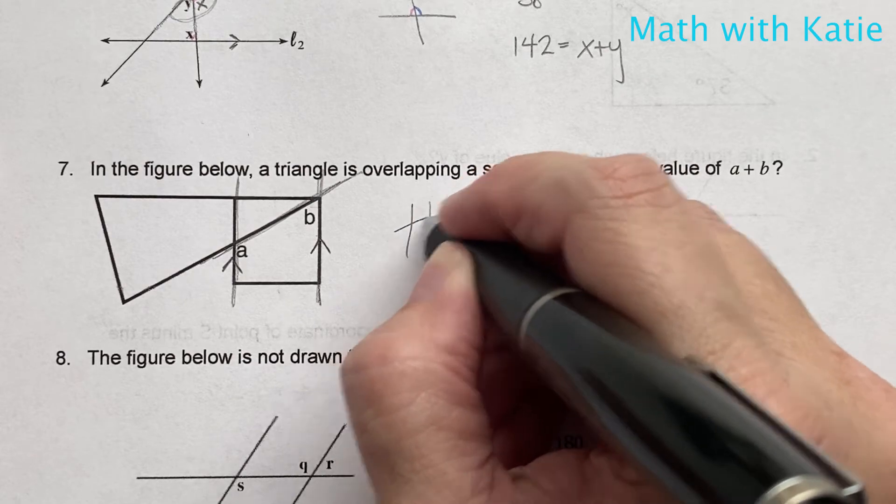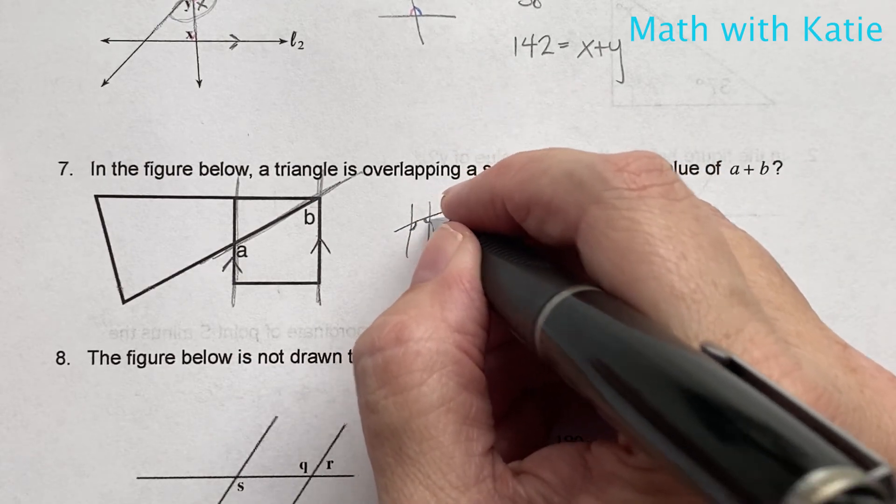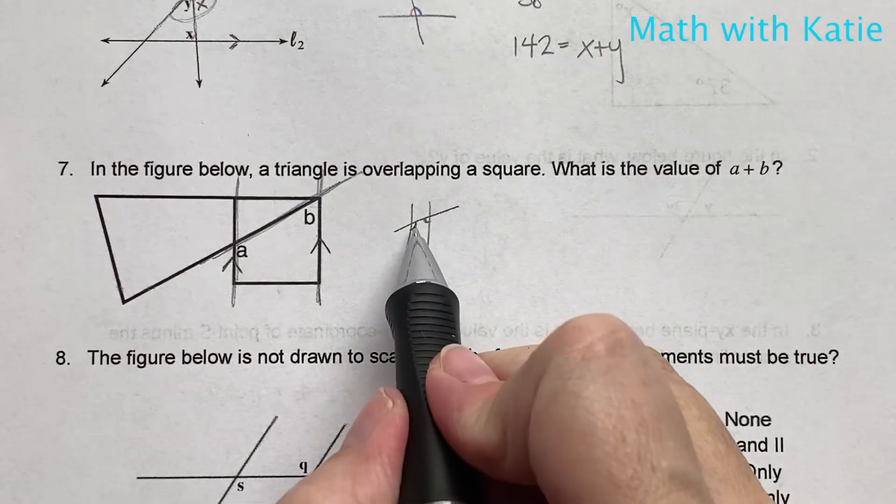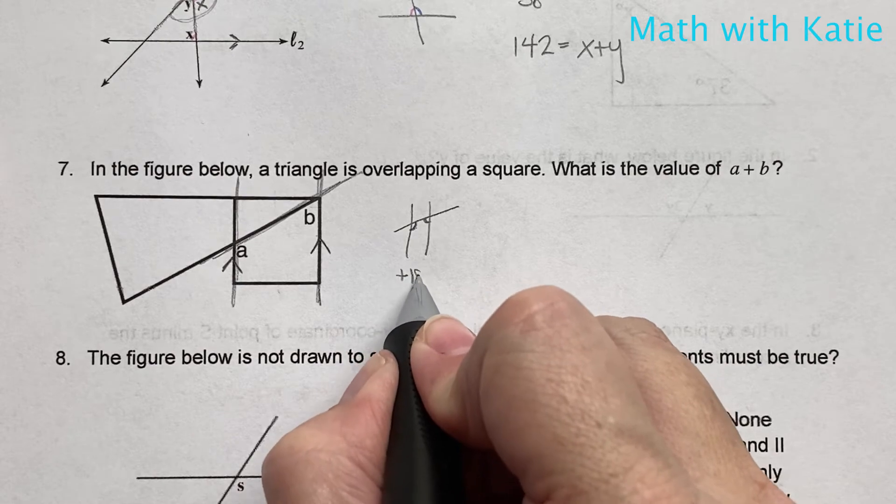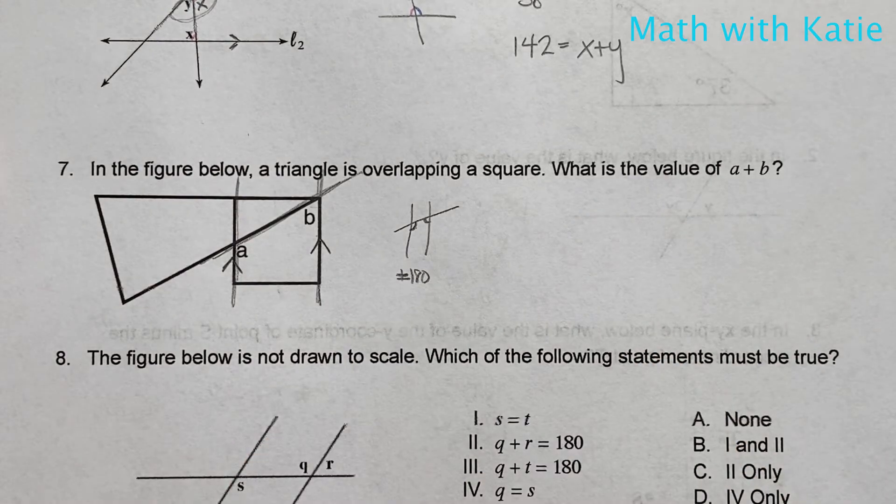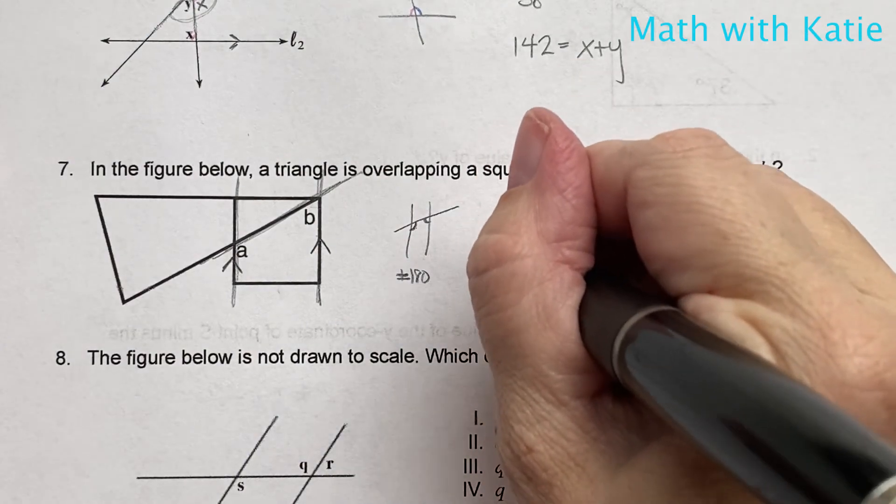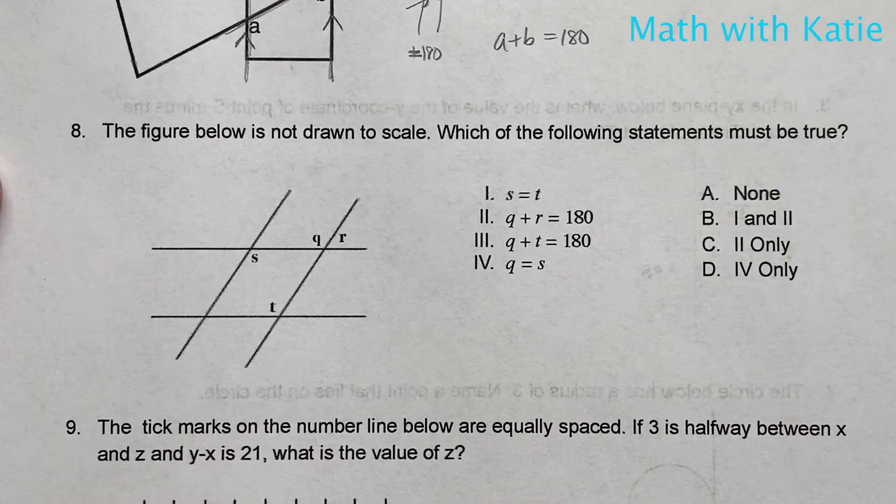we have these two angles, right? And what we know about these two interior angles is they add to 180. They add and equal 180. So a plus b is equal to 180.